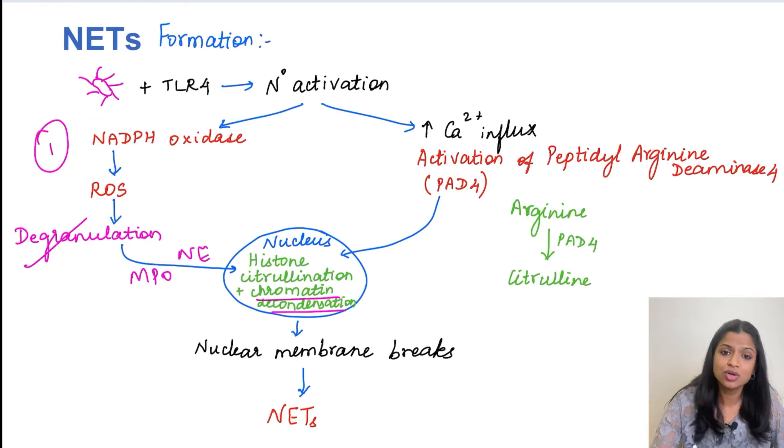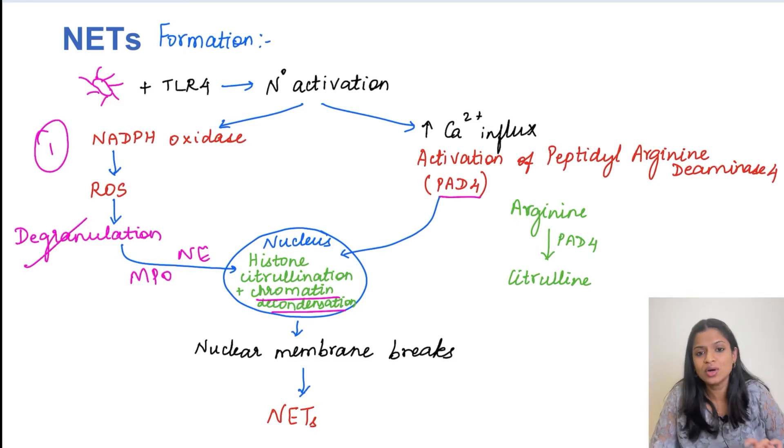Simultaneously when the neutrophils are getting activated, there will be activation of another enzyme called as PAD4. So PAD4 is nothing but peptidyl arginine deaminase enzyme. So this PAD4 is going to again enter into the nucleus and that will cause the citrullination of the histone proteins.